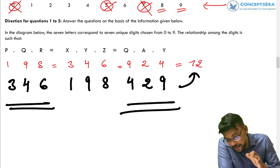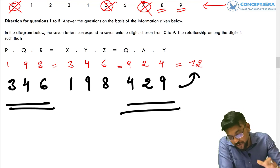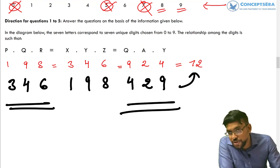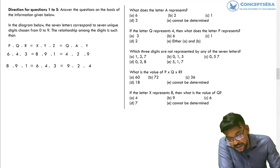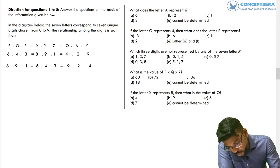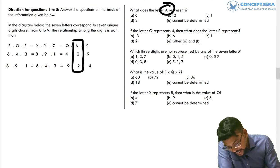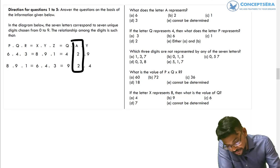Following this systematic approach, which we discussed in the previous two cases, you can see how easy this question is to decode. Looking at the five questions: the first question asks what letter A represents. In both cases A is representing 2, so the right answer for the first question is B.